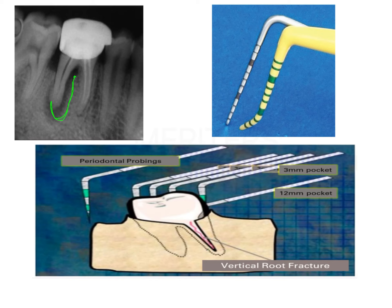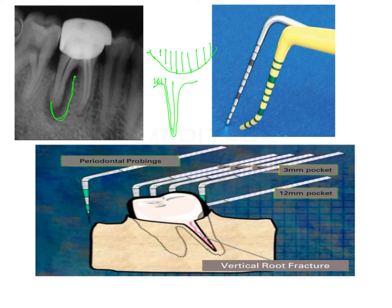Apart from radiographs, you can use a probing technique. You take a probe and probe the gingival sulcus. In a periodontal pocket, the probing depth gradually increases, but in a vertical root fracture the probing will be very deep only in one specific portion. The rest of the sulcus will measure completely normal — this is another way to diagnose a vertical root fracture.